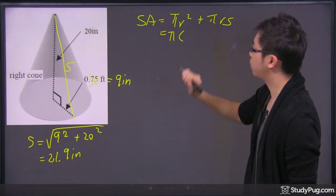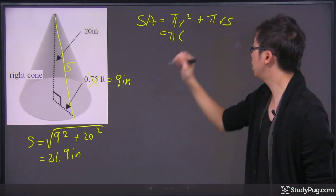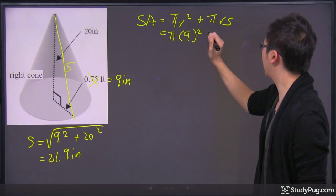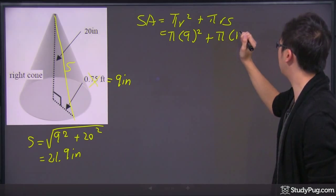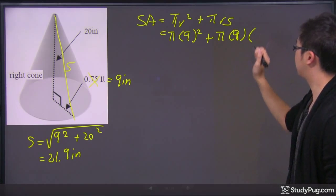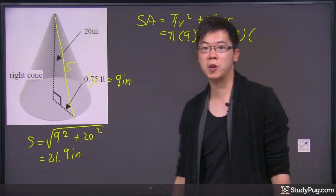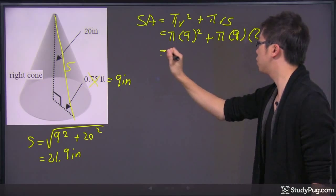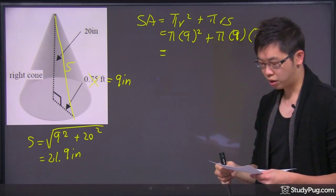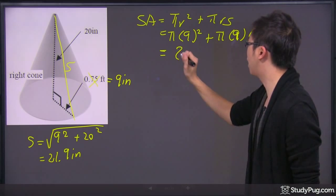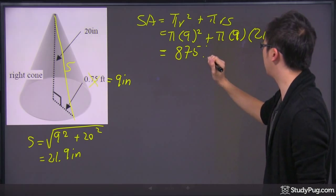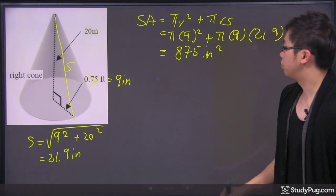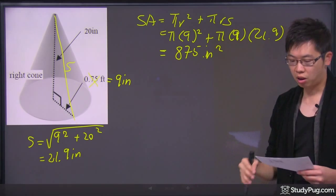Let's go ahead and plug in the values that we have. The radius is the 9 inch and square that plus the π and the 9 inch again and times the slanted side, which is 21.9. Here's my 21.9. If you do the math correctly in your calculator, you're going to get a nice number, 875. That's your inch square. That is the surface area of the entire thing.